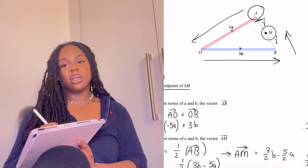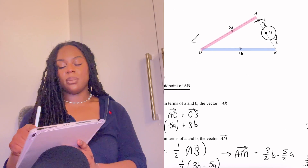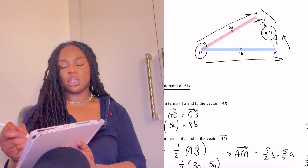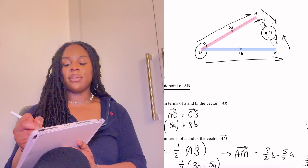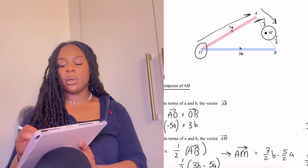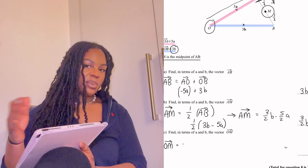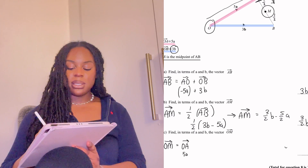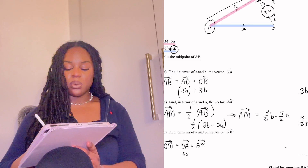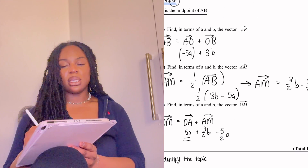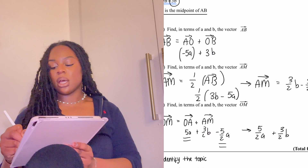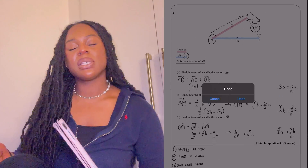Last part asks for vector OM. From my diagram, I could go O to A then A to M. OA was given in the question as 5a. AM was found in the last part. I add them: 5a plus three-over-two b minus five-over-two a. Simplifying: 5a minus five-over-two a gives five-over-two a, and b has no like term so we leave it. The final answer is five-over-two a plus three-over-two b. Three marks — foundation vectors question done. Plan the routes and go for it.